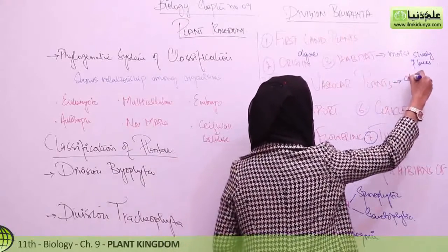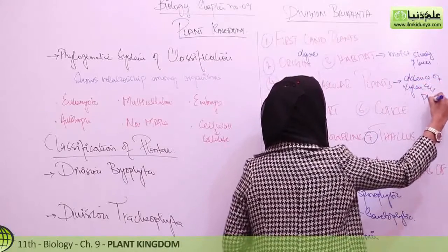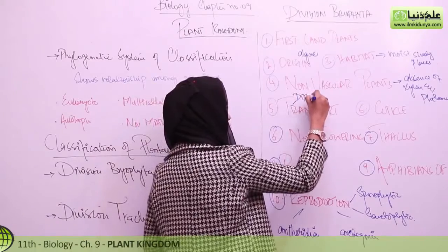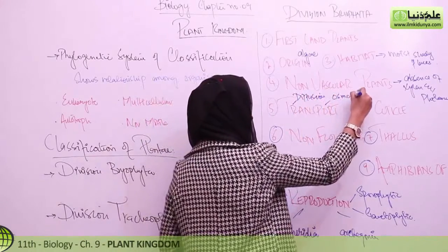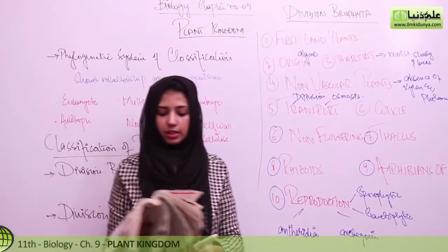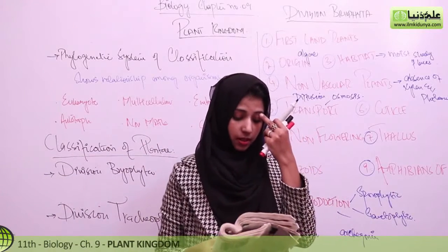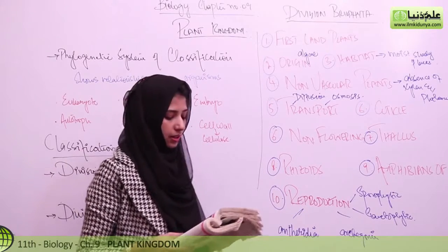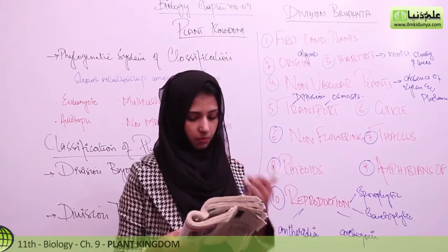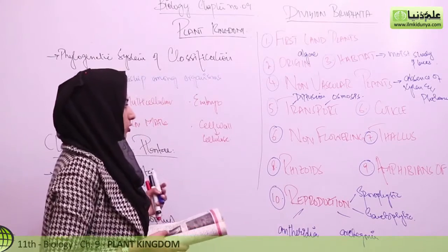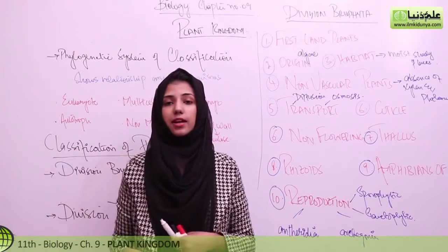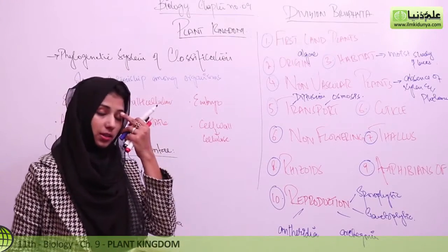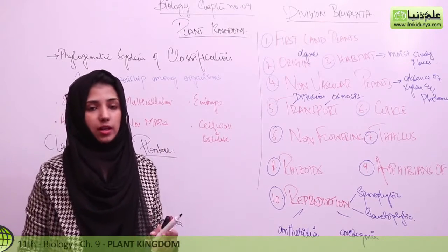They are non-vascular plants, meaning there is an absence of xylem and phloem. The mode of transportation is that food transport occurs by simple diffusion or osmosis. It is also having a cuticle — a very thin one. Water is absorbed by the general surface of the plant. They are non-flowering in nature — non-vascular and non-flowering. Thallus means that they are not having true leaves, roots, and stem — so they are having a root-like structure, stem-like structure, and leaf-like structure. There are rhizoids, which are root-like structures that help to anchor the plant into the soil.